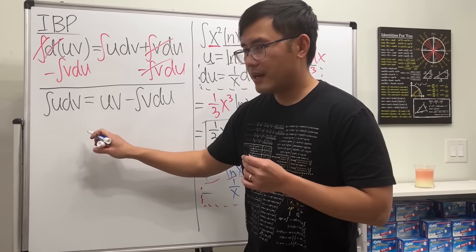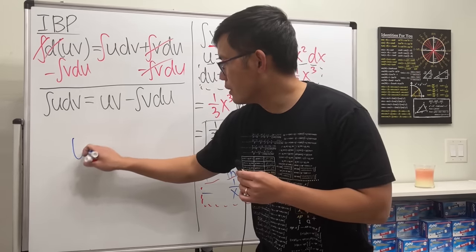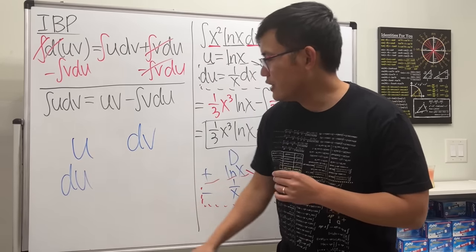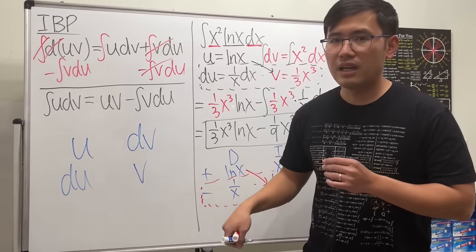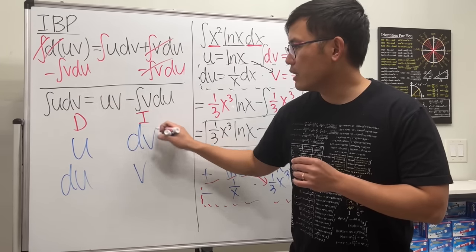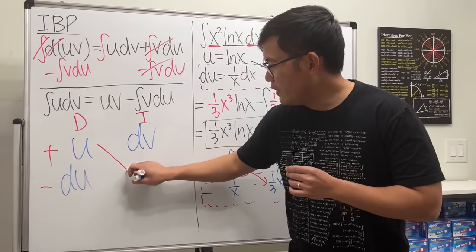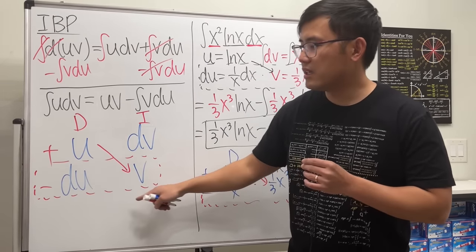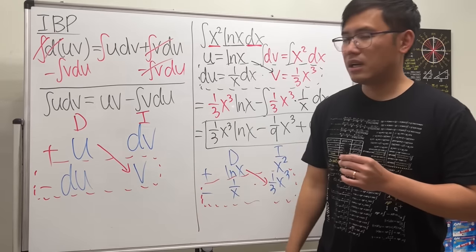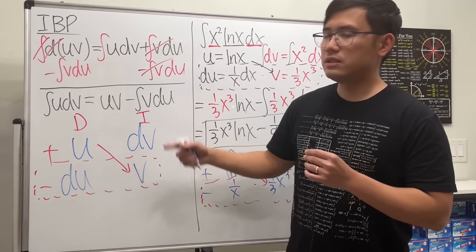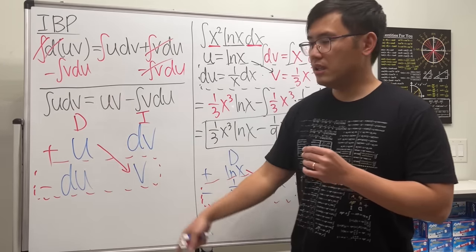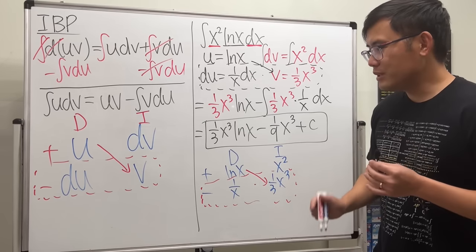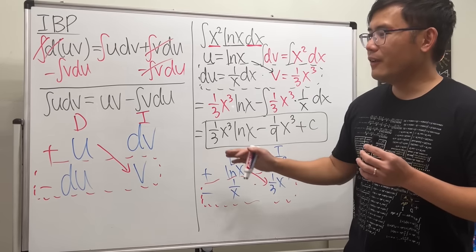Let's compare directly. In the traditional setup: u, dv in the top row; du, v in the next row. In the DI setup: the same information is arranged in a table with D and I columns and alternating signs. Taking u times v corresponds to the diagonal product, and subtracting the integral of v du corresponds to the second row product with the minus sign. They are completely equivalent: integral of u dv equals uv minus integral of v du.